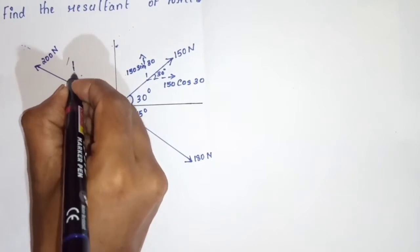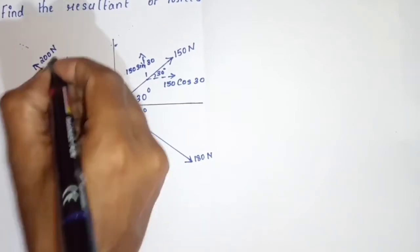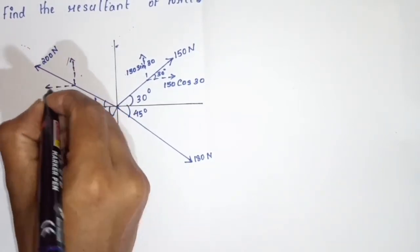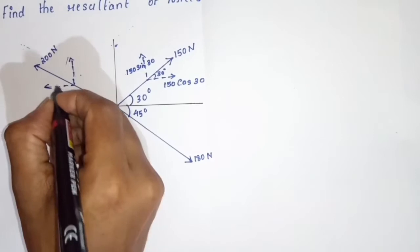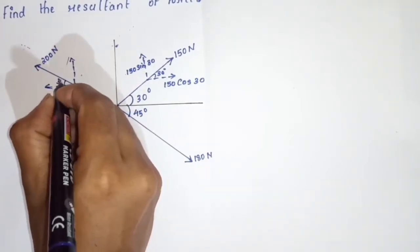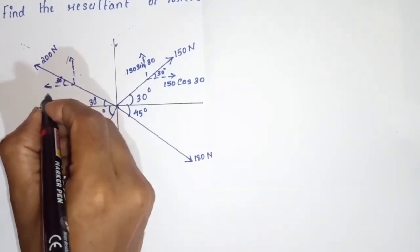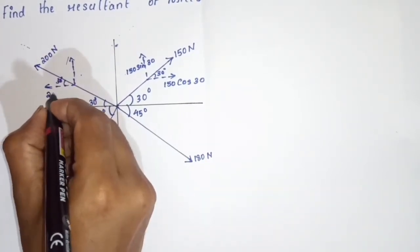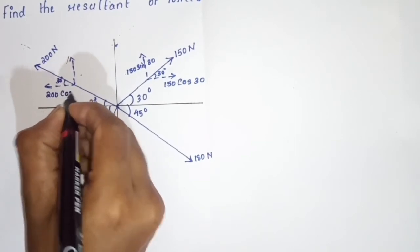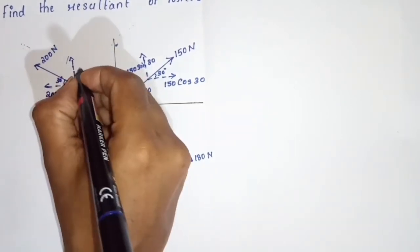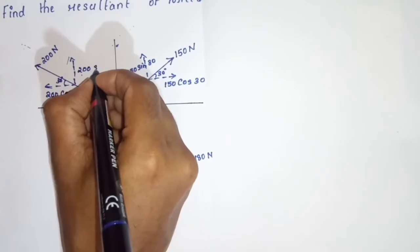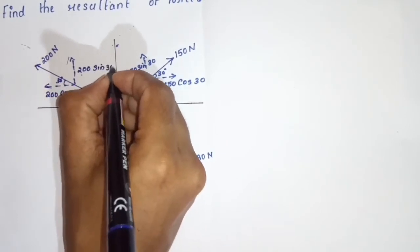Next, 200N. The angle is 30 degrees. The horizontal component is 200 cos 30, and the vertical component is 200 sin 30.